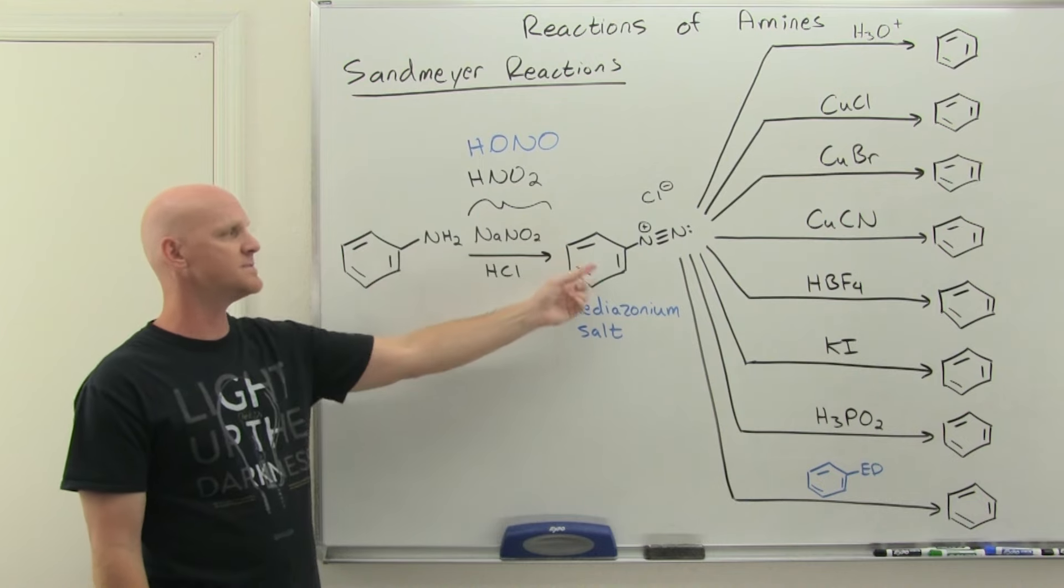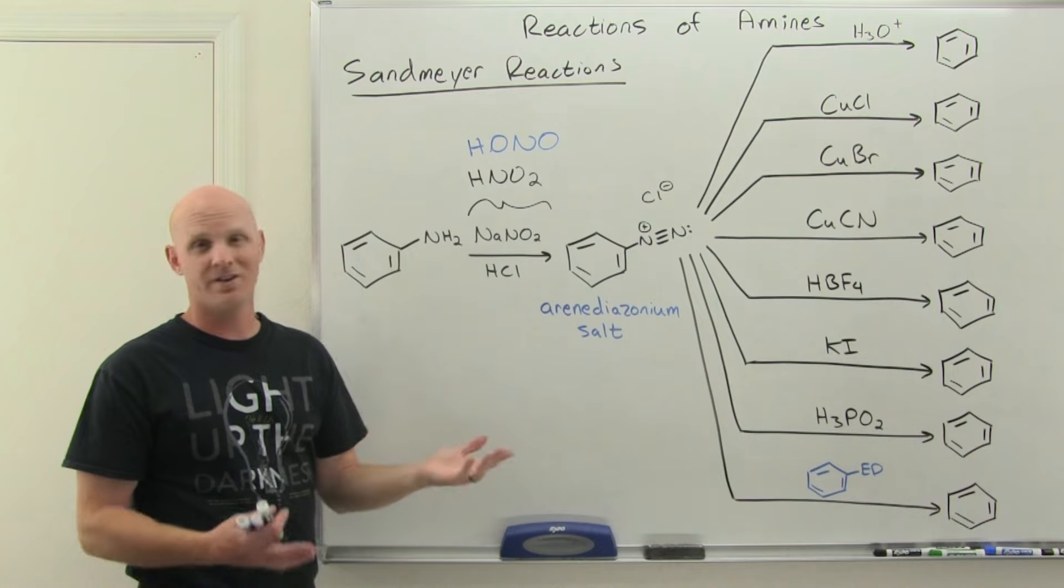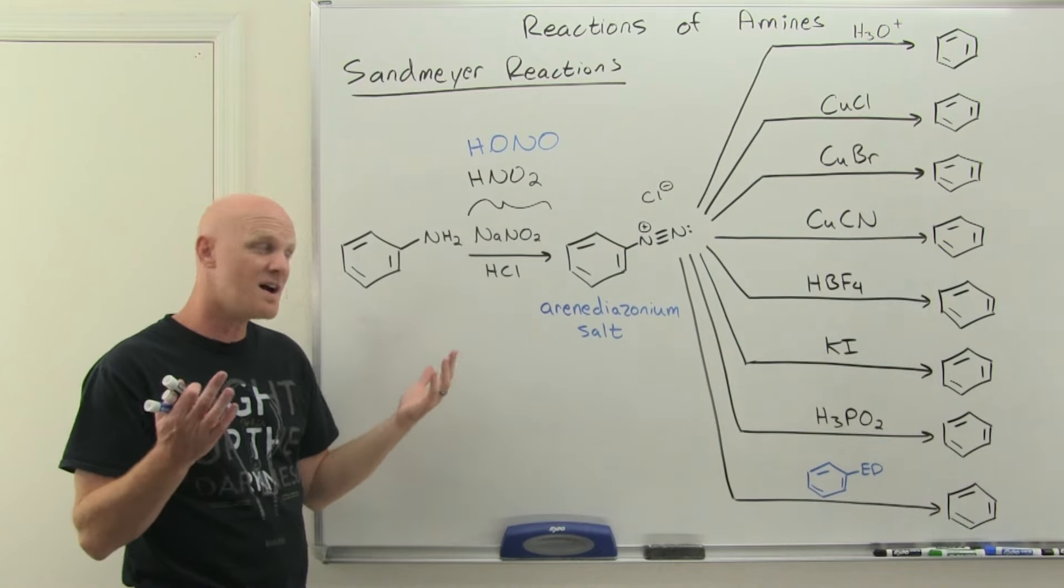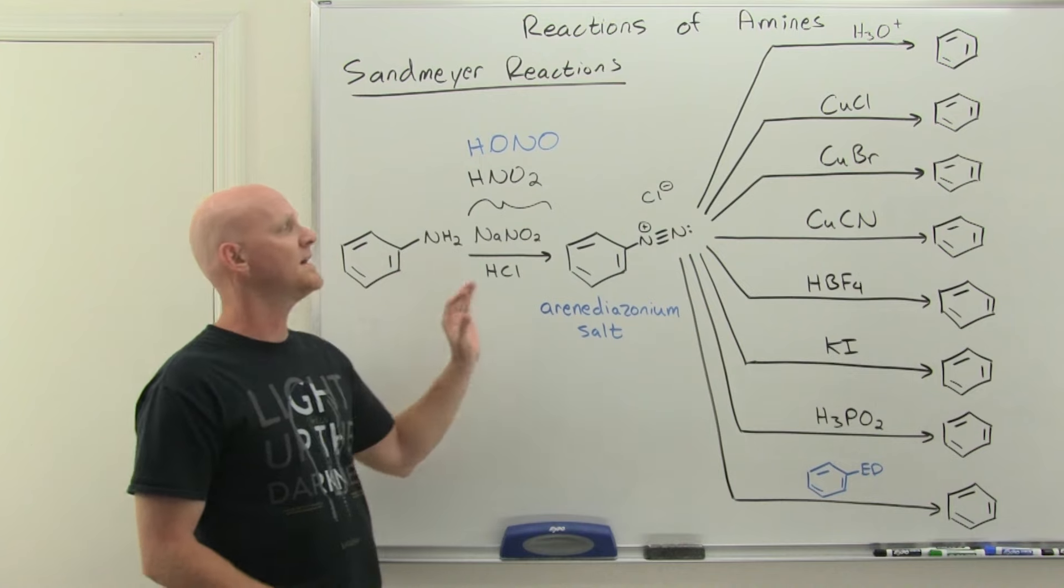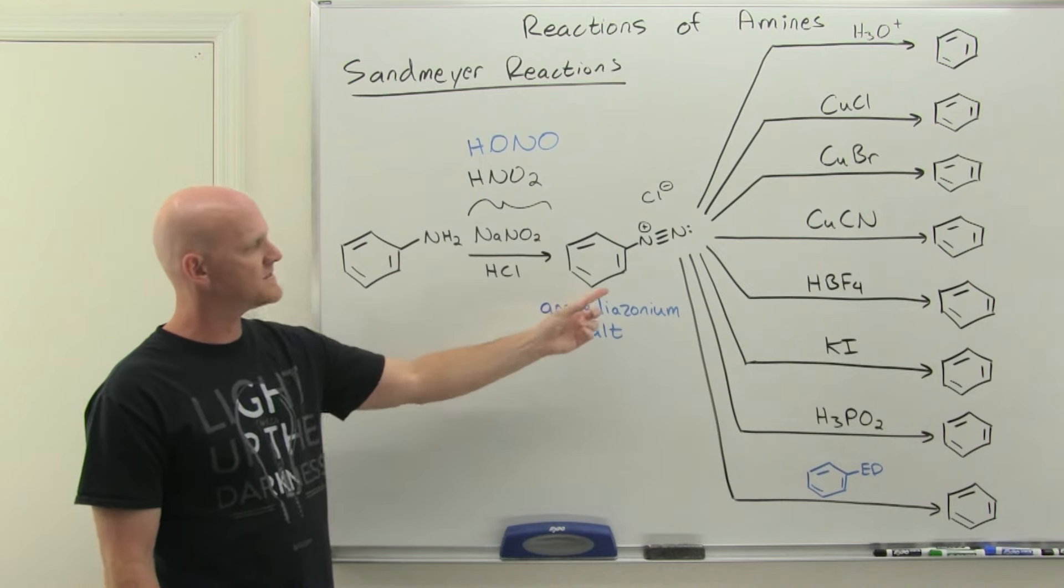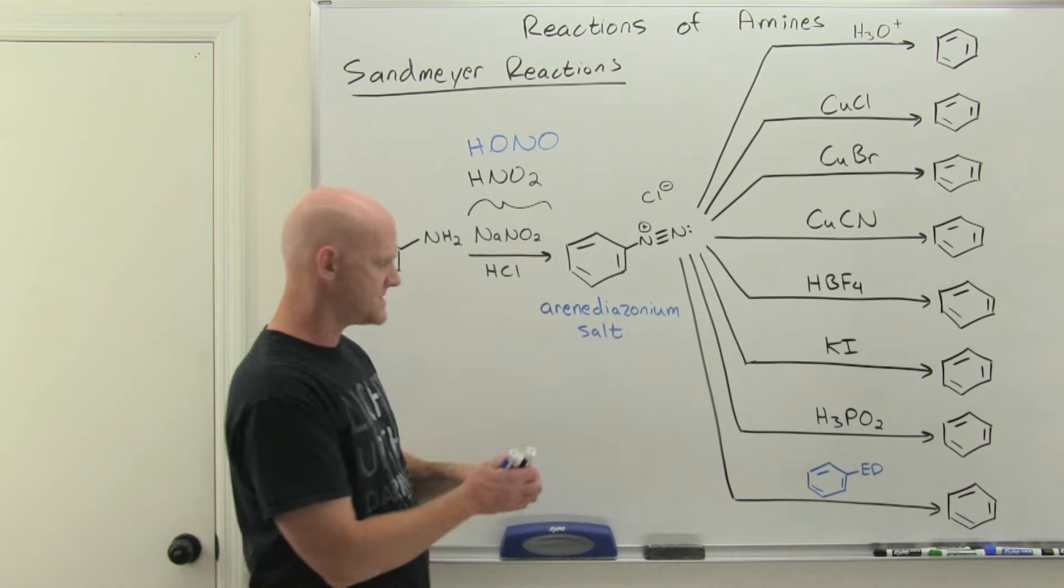So it turns out, with a primary amine, nitrous acid converts them into these arenediazonium salts, which would be of interest. With a secondary amine, it would turn it into a nitrosamine, which is not going to be synthetically useful for us or interesting anyway, so I'm going to ignore that. But with a primary amine, it turns it into these arenediazonium salts.